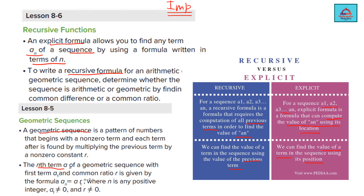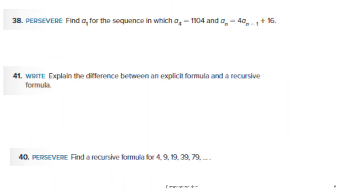The nth term A_n of a geometric sequence where the first term is A1 and the common ratio is R is given by the formula: A_n = A1 × R^(n−1), where A1 is the first term, R is the common ratio, and n is the term number — a positive integer. Let's use this concept to solve questions 38, 41, and 40.